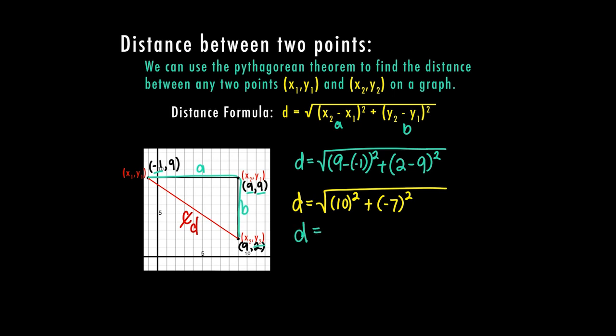So we're going to go back to green so we can see the steps. 10² is 100. -7² is 49. That negative is inside the parentheses. So it's negative times negative is a positive. So now d = √149.